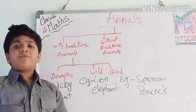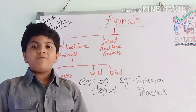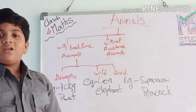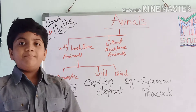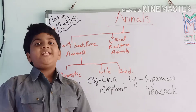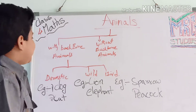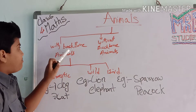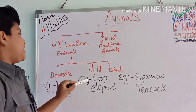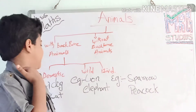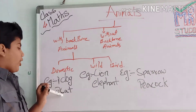The backbone — we cannot remove it. Without backbone, we cannot live. We stand and walk with backbone. Let's see with-backbone animals. There are domestic animals, wild animals, and birds.